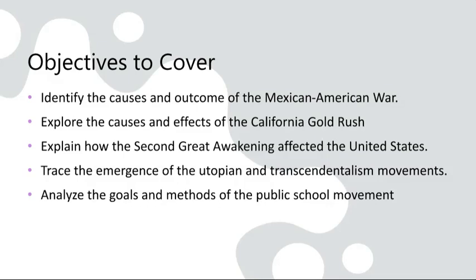In 1848, gold was discovered in California, leading to the famous California Gold Rush. The lure of instant wealth drew people from across the United States and around the world to the region. The Gold Rush had profound effects, both immediate and long-term. It spurred California's rapid population growth, contributing to its statehood in 1850. The influx of people also led to the growth of infrastructure and industries. However, it had a detrimental consequence for Native American populations, and the environmental impact was significant due to rampant mining.